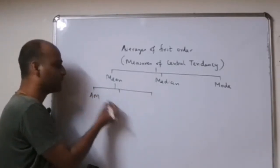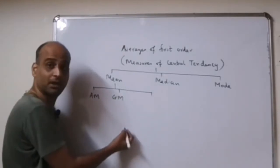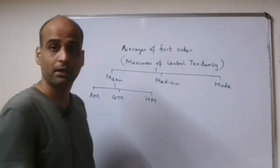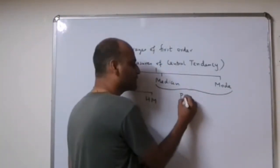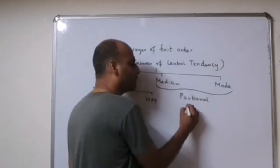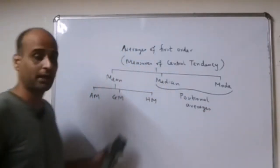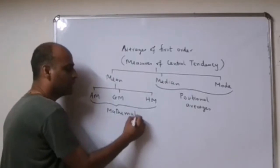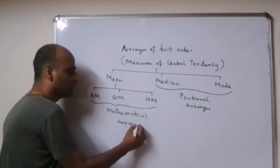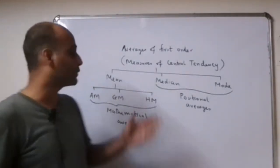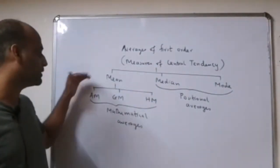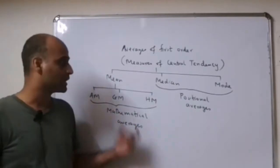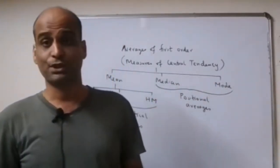The first one is the arithmetic mean, the next is the geometric mean, and the last one is the harmonic mean. Median and mode are called as the positional averages. And AM, GM, HM together are called the mathematical averages. So the measures of central tendencies have three types — mean, median, and mode — out of which mean is further of three types: arithmetic mean, geometric mean, harmonic mean.